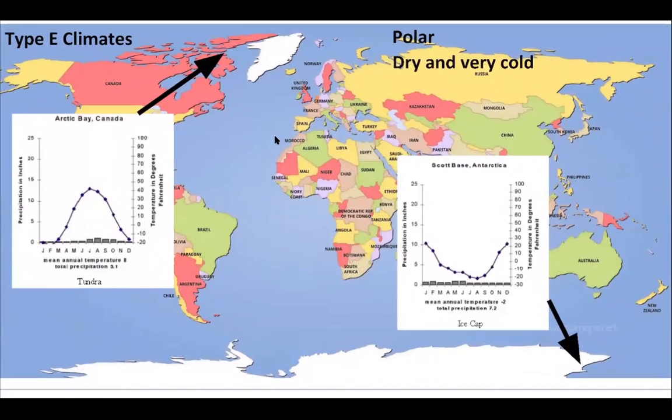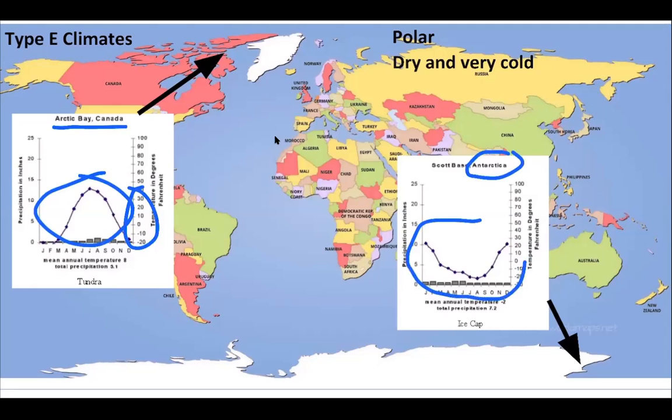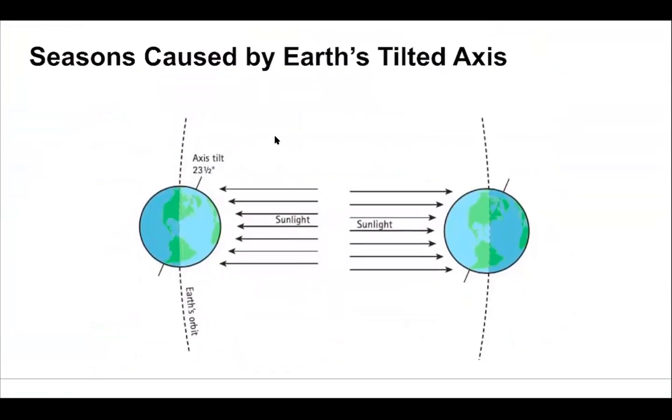As you move north and south, you get to polar regions which are super extreme. Very cold temperatures, big fluctuation in places like Arctic Bay in Canada versus in the Antarctic. Being in the southern hemisphere, it's the exact opposite and below freezing for most of the year, which is why we don't usually have permanent human settlements in Antarctica.